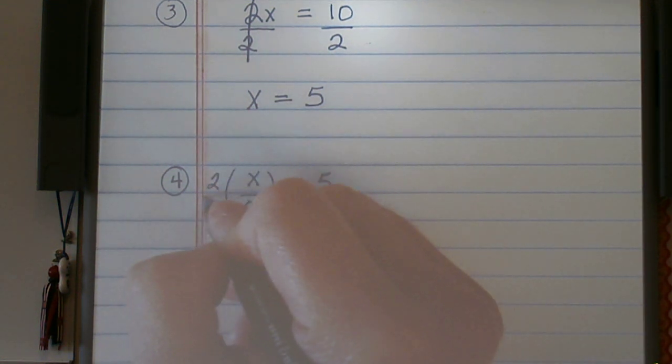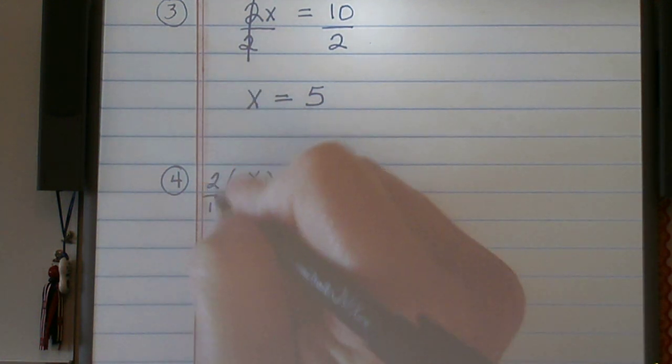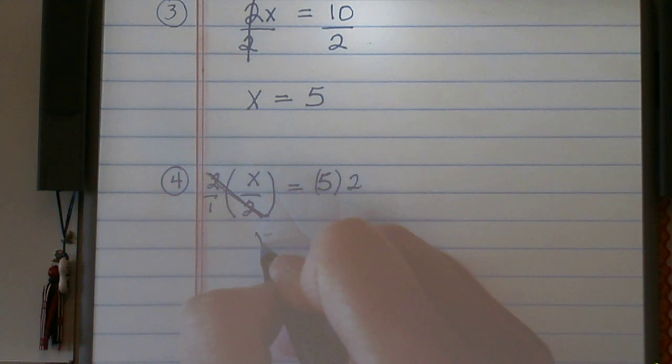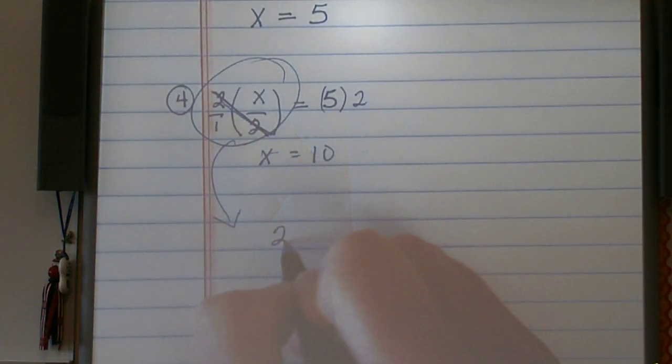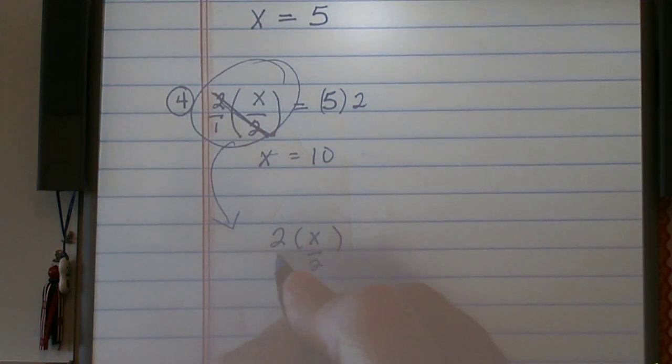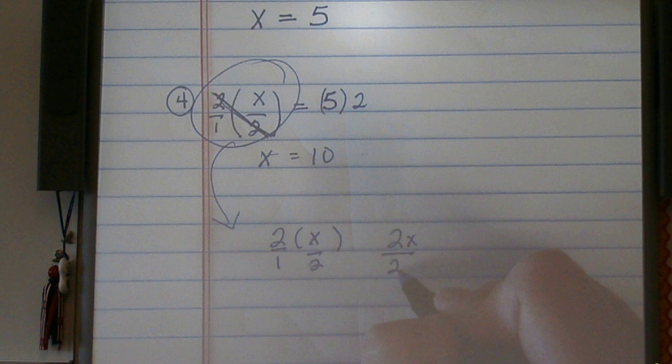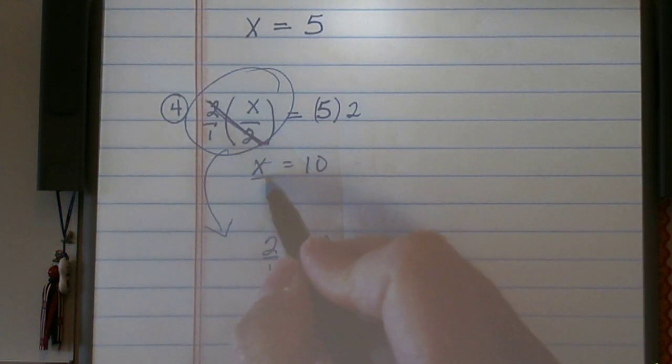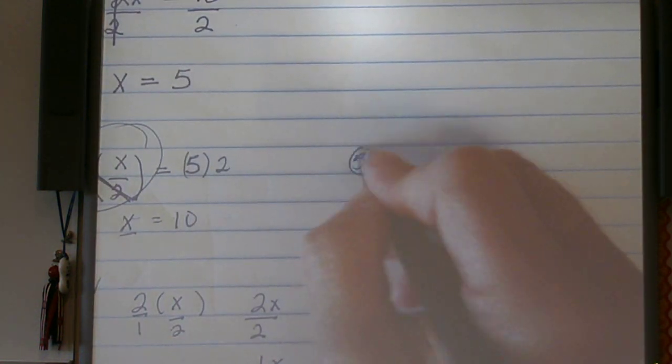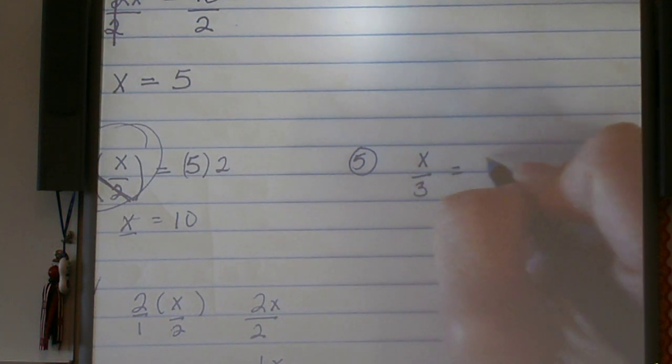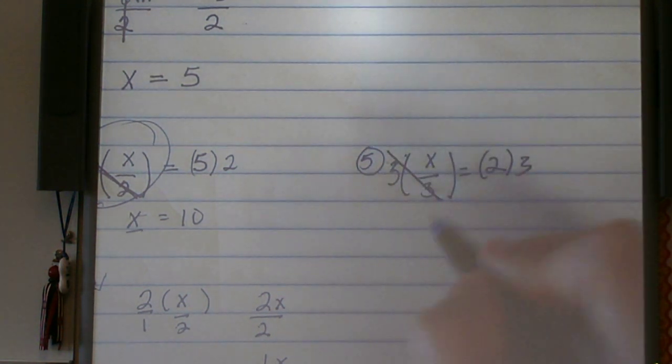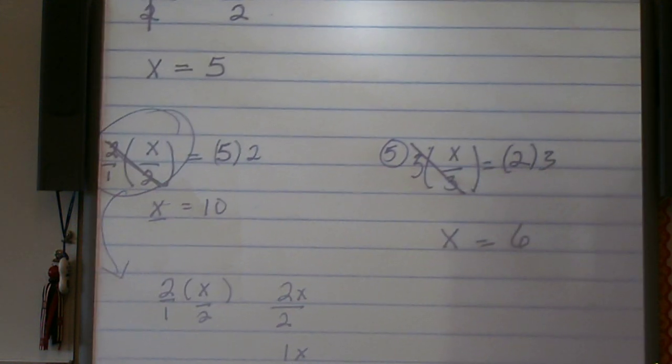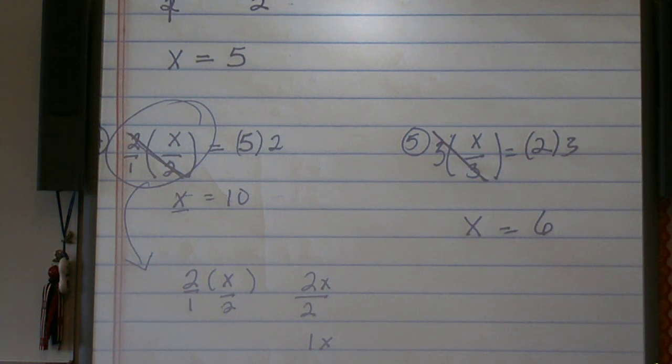Multiply both sides by 2, and this is going to cancel out, and we're left with x equals 10. Now, let me show you the reasoning that this works. Because when I say 2 times x over 2, what I really have is 2 over 1. And 2 times x is 2x, and 1 times 2 is 2. And 2x divided by 2 is 1x, which we can just write x. So let's write x equals 6. So this is using our inverse operations for multiplication and division.